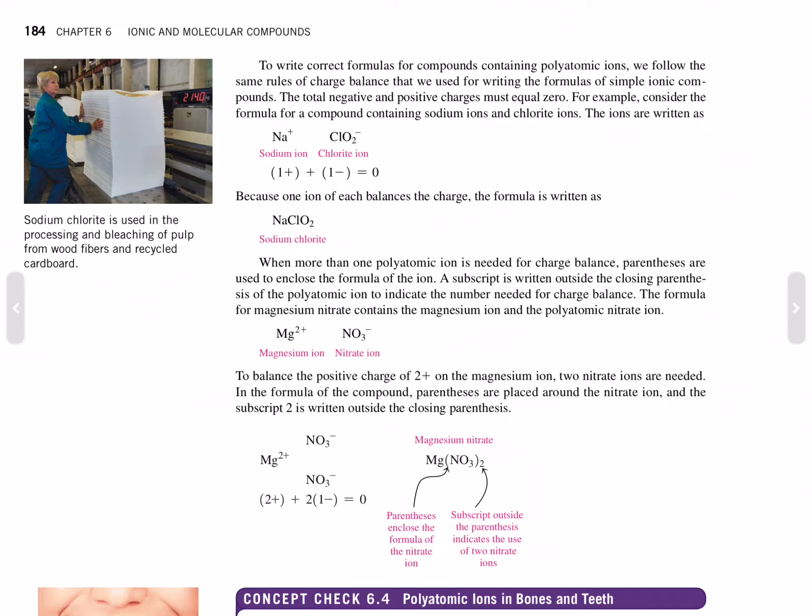When more than one polyatomic ion is needed for charge balance, parentheses are used to enclose the formula of the ion. A subscript is written outside the closing parentheses of the polyatomic ion to indicate the number needed for charge balance. The formula for magnesium nitrate contains the magnesium ion and the polyatomic nitrate ion, Mg^2+ and NO3^-. To balance the positive charge of +2 on the magnesium ion, two nitrate ions are needed. In the formula of the compound, parentheses are placed around the nitrate ion, and the subscript 2 is placed outside the closing parentheses. Magnesium nitrate: Mg(NO3)2.